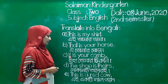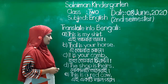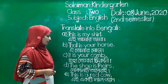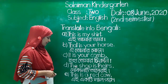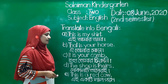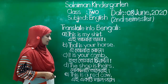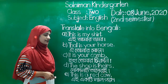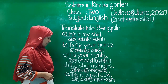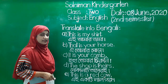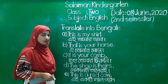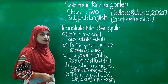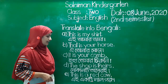C number: It is your come. Atho, it is your come. D number: The shop is theirs. Atho, do kanti ta diri. E number: This is a great cow. Atho, a eti lang buru.